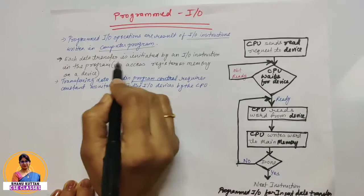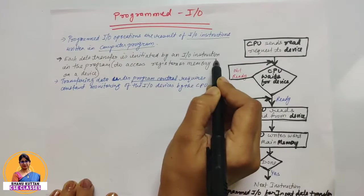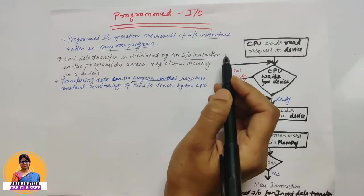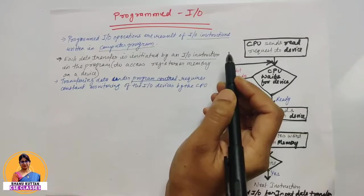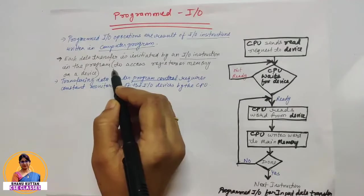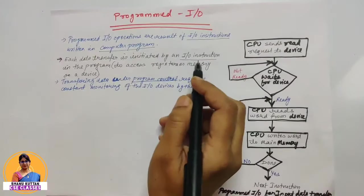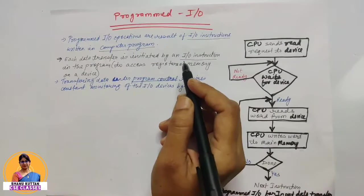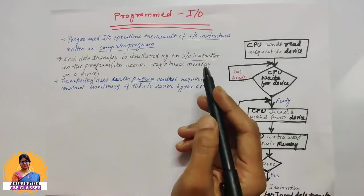Now, jo bhi data transfer ho raha, each data transfer is initiated by an I/O instruction. Jo bhi data transfer yaha initiate ho raha hai, woh I/O instruction means input output instructions ke through hi initiate hoota hai jo ki programs mein likhye hoote hai. Taki hum CPU ke registers ko, memory ko, ya input output devices ke registers ko access kar sake, aur un dono ke beech mein aapas mein data ko transfer kar sake.